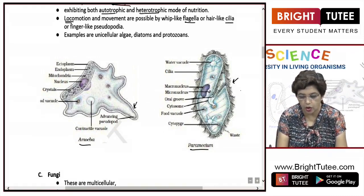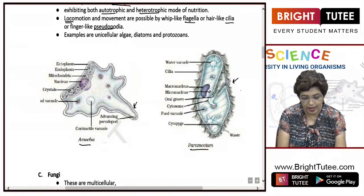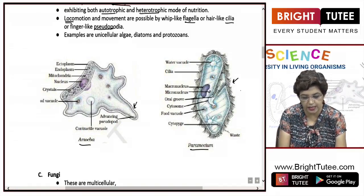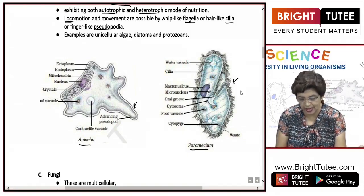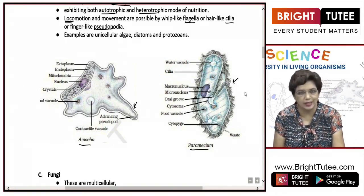Flagella or tiny hair-like cilia or pseudopodia help in locomotion. Examples are unicellular algae, diatoms, and protozoans like Paramecium and Euglena.